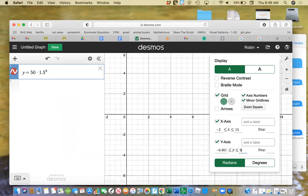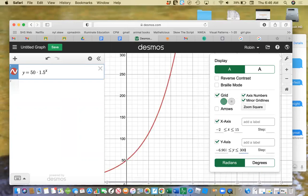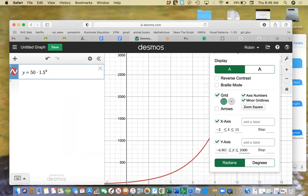And then for my y, I'm going to see if I go to 3000, what does that look like? 3000. And that looks pretty good.